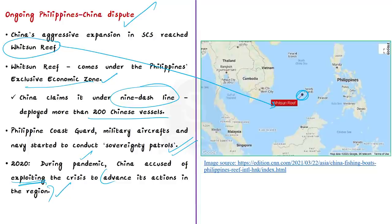Throughout 2020, at the height of the global pandemic, China was accused of exploiting the crisis to advance its territorial claims in the South China Sea. China sank a Vietnamese fishing vessel and disrupted Malaysian oil exploration. The present situation in the South China Sea is already grave, and there is a need for peaceful international arbitration to solve this long-pending issue.